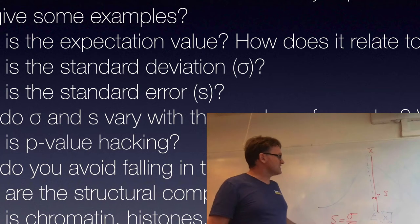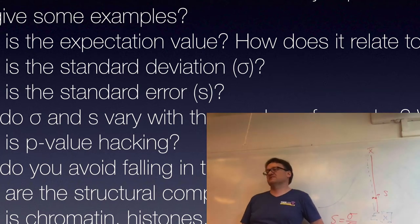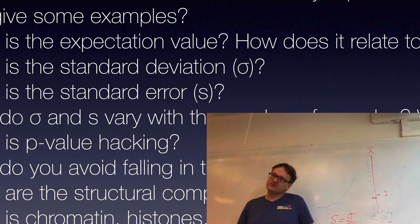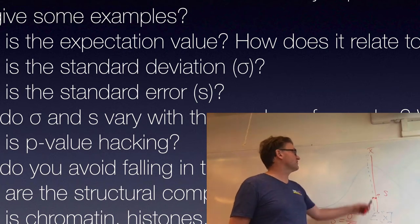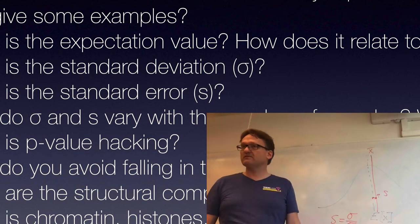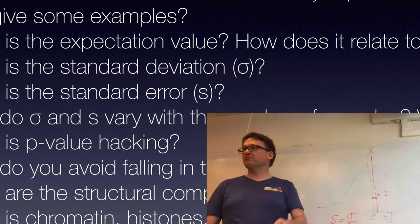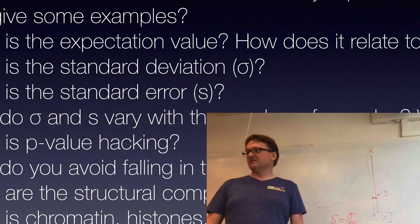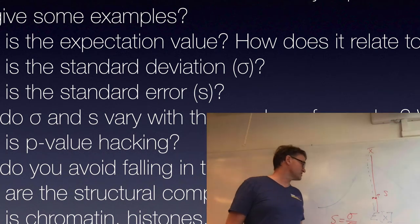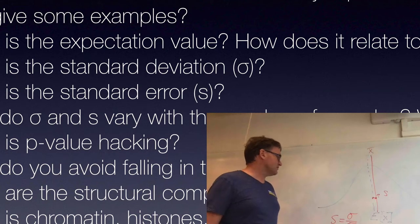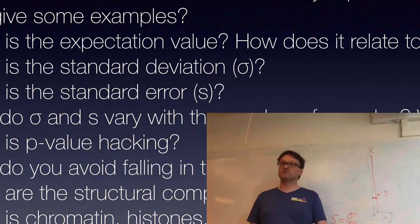Why does it make sense that S drops as n increases? Because with more data, we get a better estimate. We're estimating the expectation value from the average, and of course the more data points we have, the more confident we are that the average is close. This way we can actually calculate how good it is. If we have a way to estimate sigma, we can say how many samples you'd need to get one kilocalorie per mole accuracy — and that tells you how much data you need.